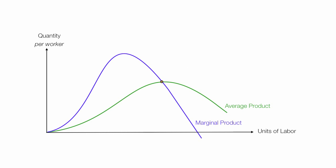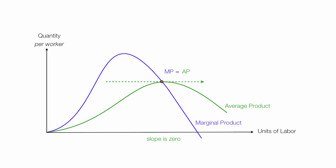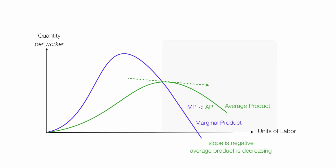If I go just a little bit further, where average product equals marginal product, the slope of the line is zero — that means average product is not changing at that point. The final area is where marginal product is less than average product. Here the slope is negative, and average product is decreasing in this area.